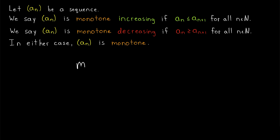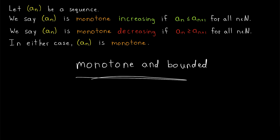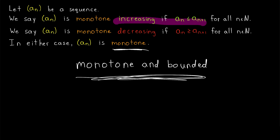The first big theorem we'll prove about monotone sequences is really cool — it's called the monotone convergence theorem, and it concerns sequences that are both monotone and bounded. What can we say about a monotone and bounded sequence? Remember, monotone means it's increasing or decreasing, or both if it's a constant sequence. I'll leave a link in the description to the lesson where we prove the monotone convergence theorem, which will tell us everything we need to know about monotone and bounded sequences.